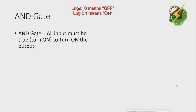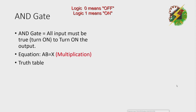First, we need to discuss what an AND gate is. AND gate: all inputs must be true or turned on to turn on the output. The equation is A times B equals X. For the truth table, we have A, B, and X.